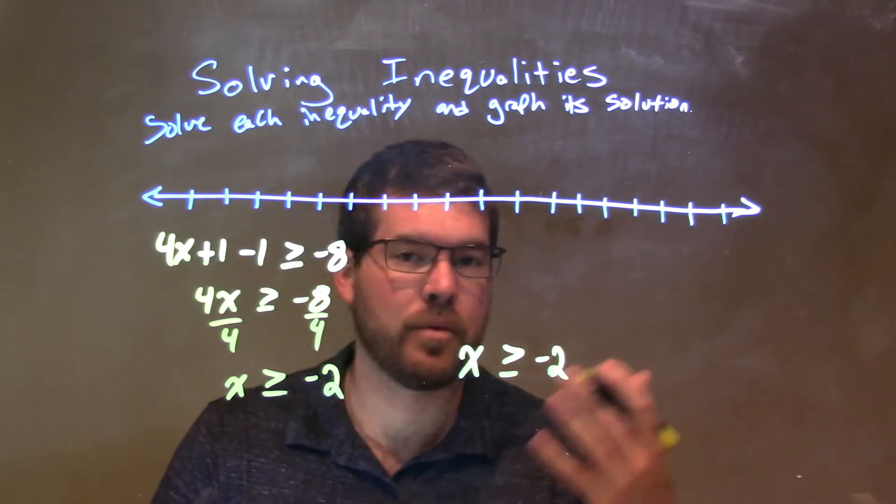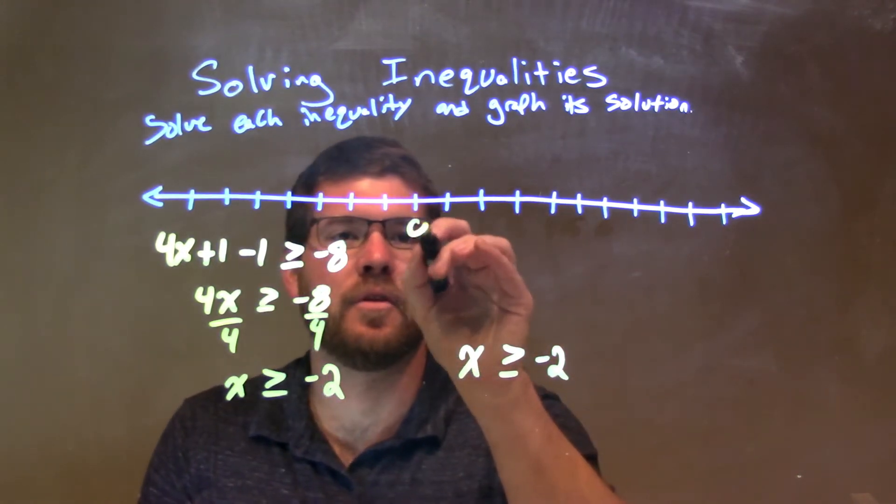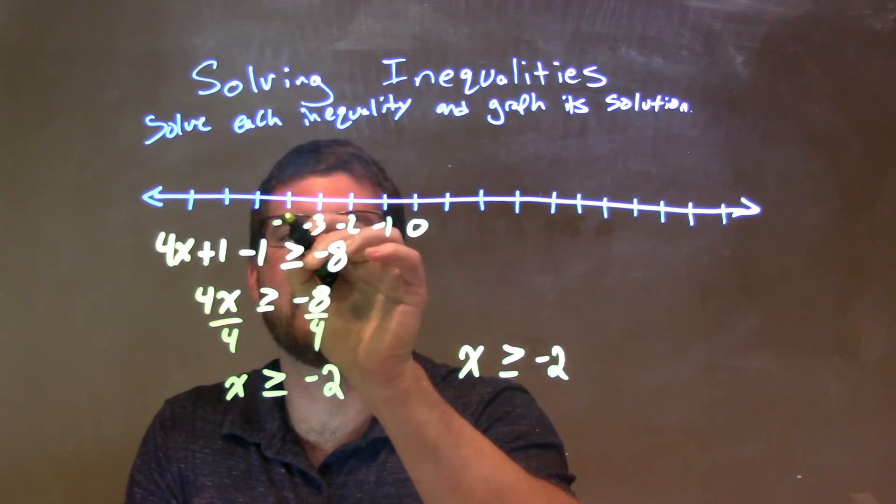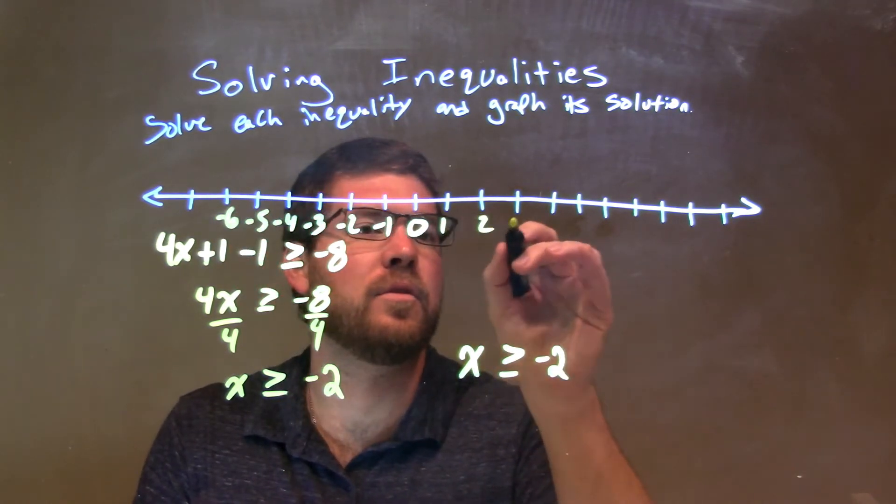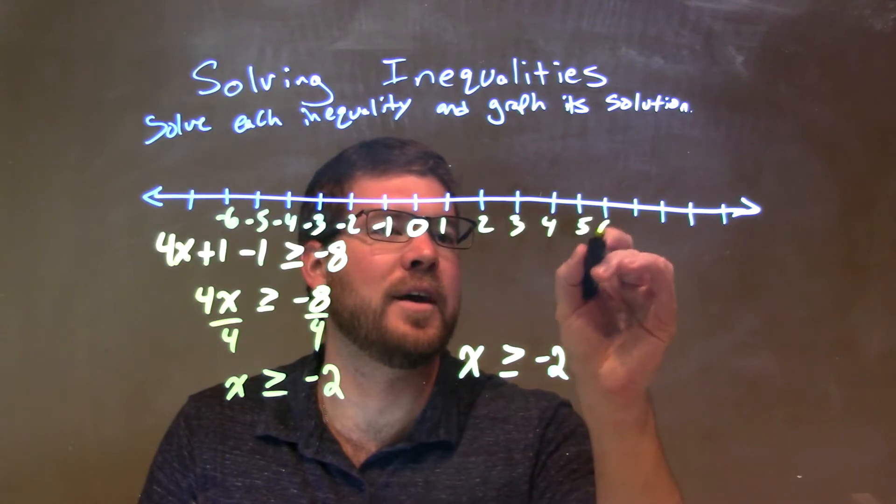When we create our number line here, let's just put 0 right here. We have negative 1, negative 2, negative 3, negative 4, negative 5, negative 6. That's good enough. 1, 2, 3, 4, 5, and 6.